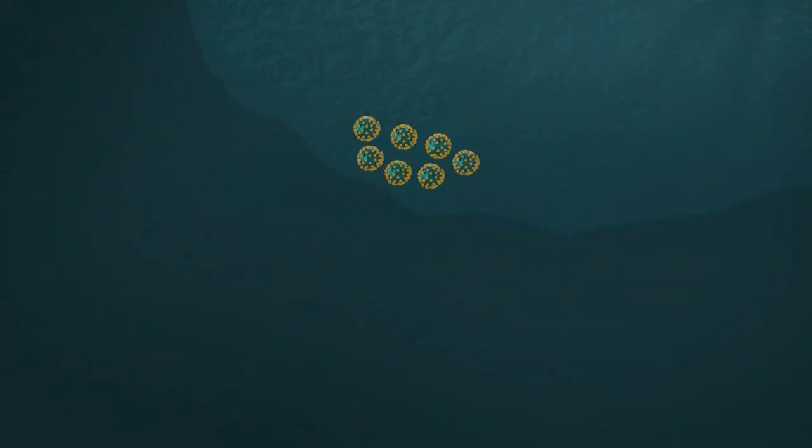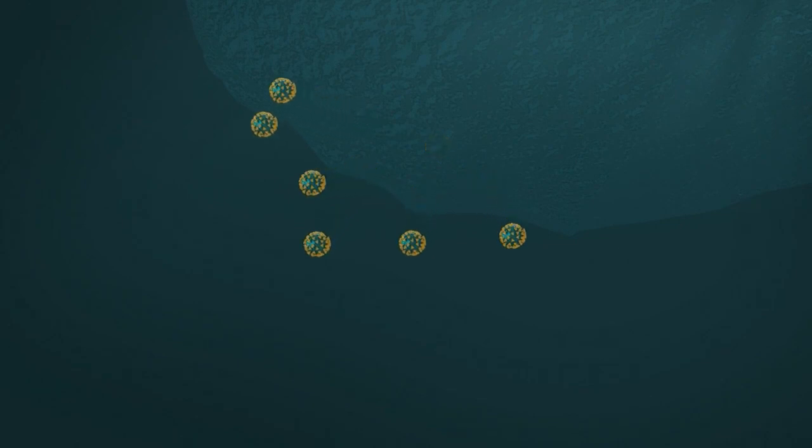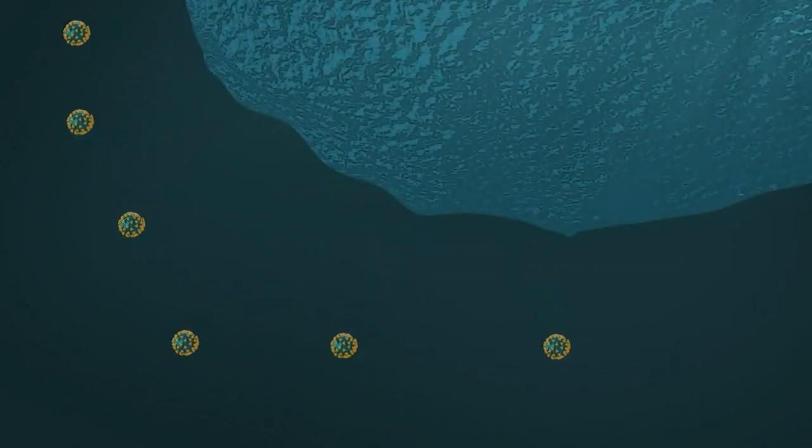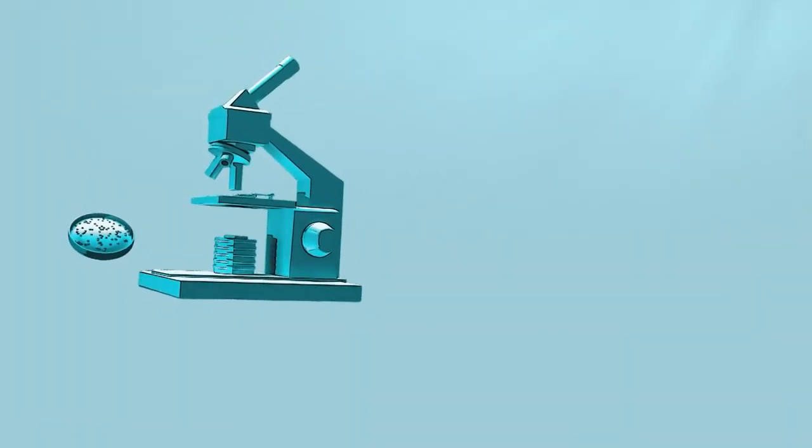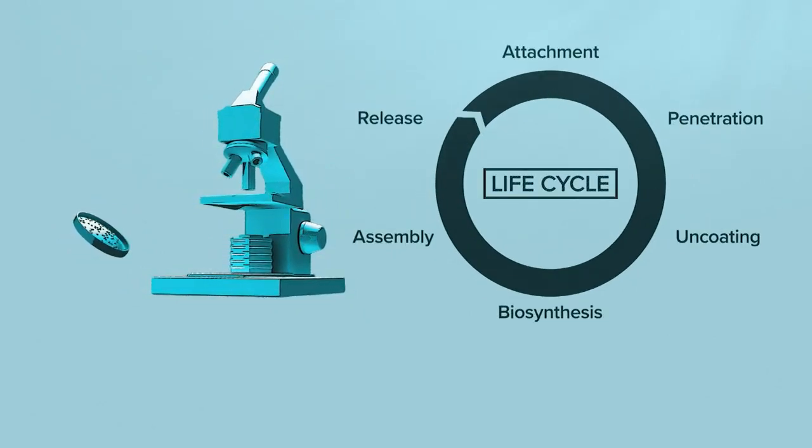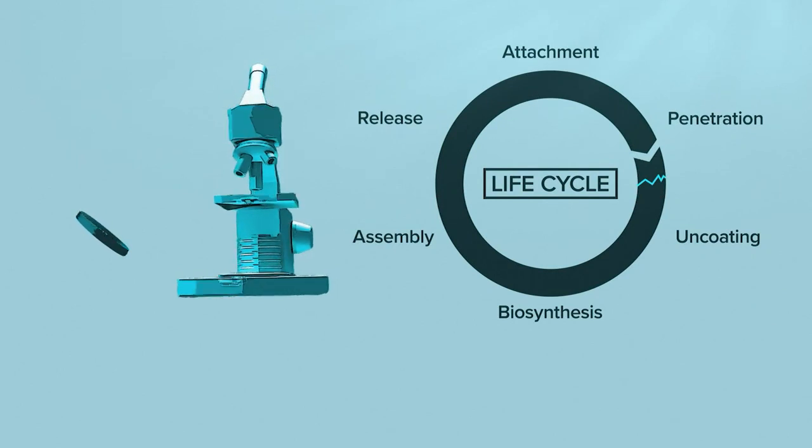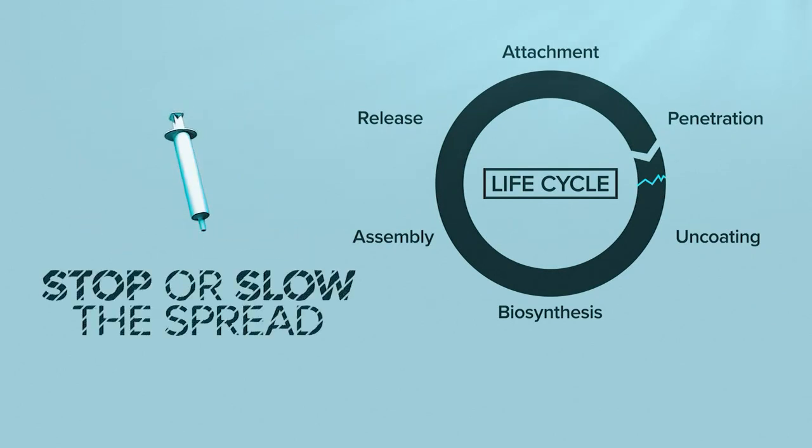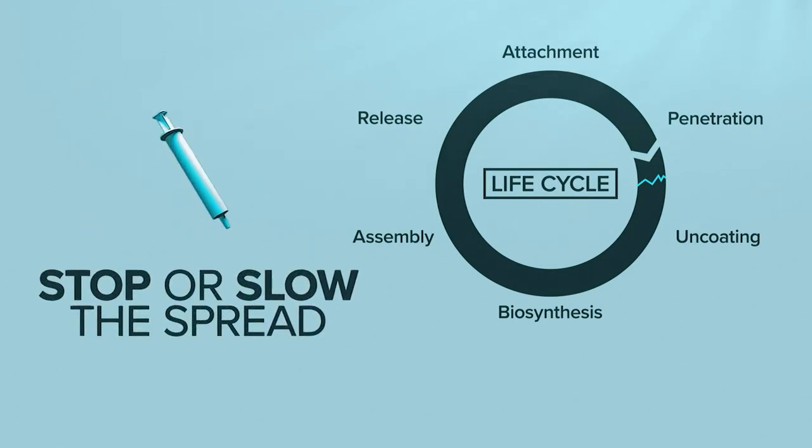Those new copies start leaving the cell and can travel to other parts of your body to infect more. Scientists are studying the details of every step of the virus's life cycle. If we can find a way to interrupt any part of that cycle, it could lead to a new treatment and stop or slow down the spread.